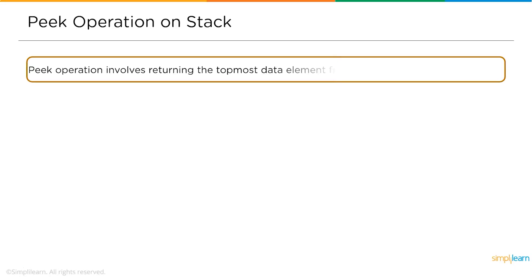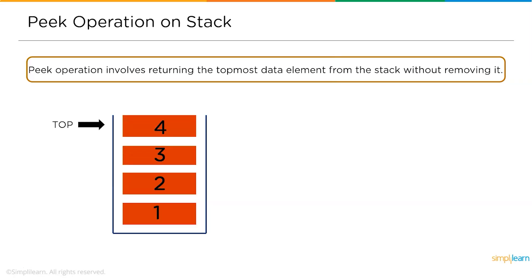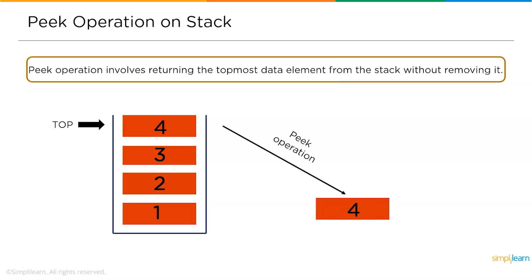The peek operation returns the topmost data element from the stack without removing it. The top is pointing to element number four and you are peeking that element — you are not removing it from the stack, just returning its value.